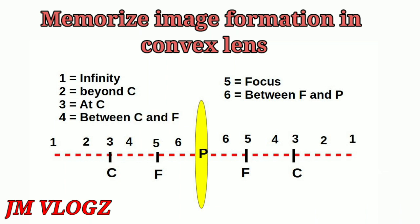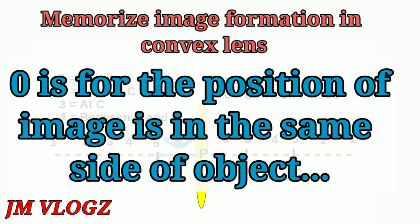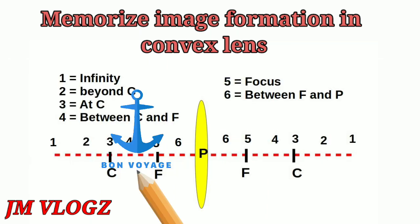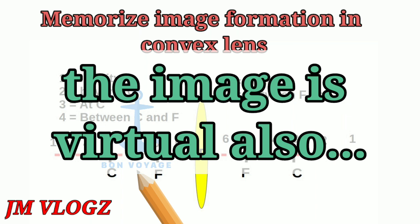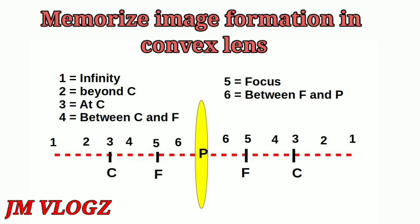Now the climax: with the object between focus and pole, that is position 6, we get 6 minus 6 equals 0. Always remember, if we get 0, the image is on the same side as the object. In this case the image is on the same side as the object, between C and F — that is at position 4. Always remember that twist!